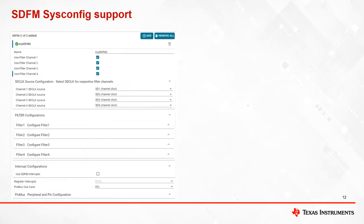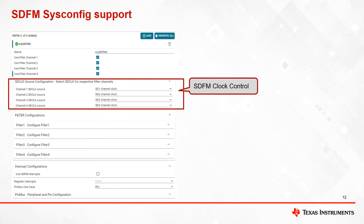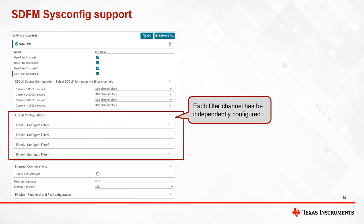The SDFM module is fully supported within SysConfig, which is a C2000 graphical intuitive tool for configuring peripherals and modules on C2000 devices. All features available in SDFM can be configured using SysConfig. This slide shows what you will see in the SysConfig tool for SDFM. This section allows the user to select filter channels to be used in an application. Users can configure the SDFM clock control feature, and each filter channel has its own drop-down menus and can be independently configured based on application requirements.